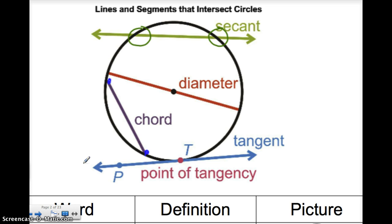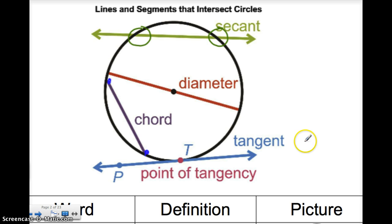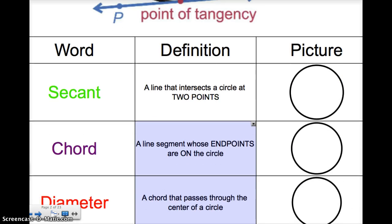Now you see this sketch over here. These are the different words we're going to be discussing: a secant, a diameter, a chord, and a tangent line. So let's get these down. Please take some notes and let's look at these.